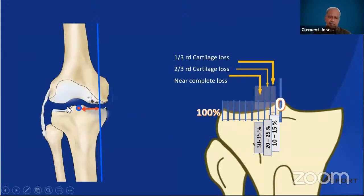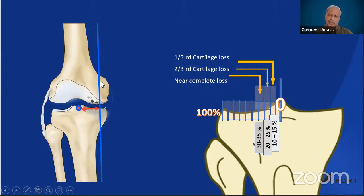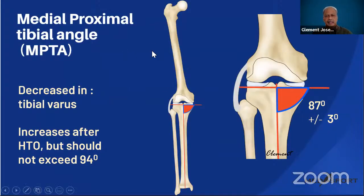The aim of osteotomy is to bring the mechanical axis to the lateral compartment. Normally, we don't take it all the way to the Fujisawa point (62.5%). Nowadays, we shift the line to somewhere around the lateral tibial spine, resulting in about 3–4 degrees of valgus. However, if there is significant cartilage loss — two-thirds or near-complete — you may want to shift the weight-bearing line further laterally for better unloading and longevity of the HTO.